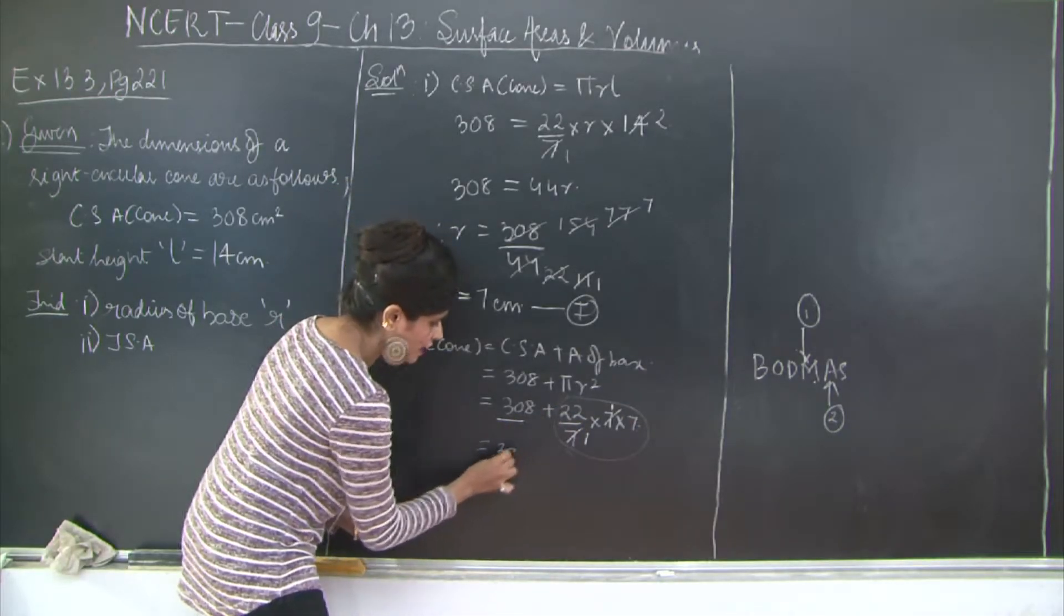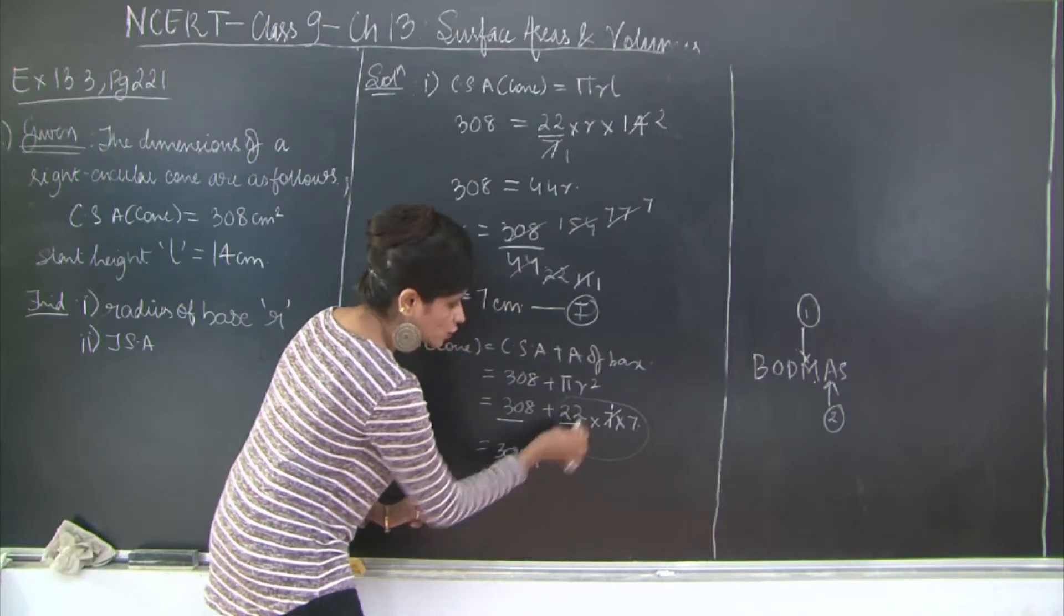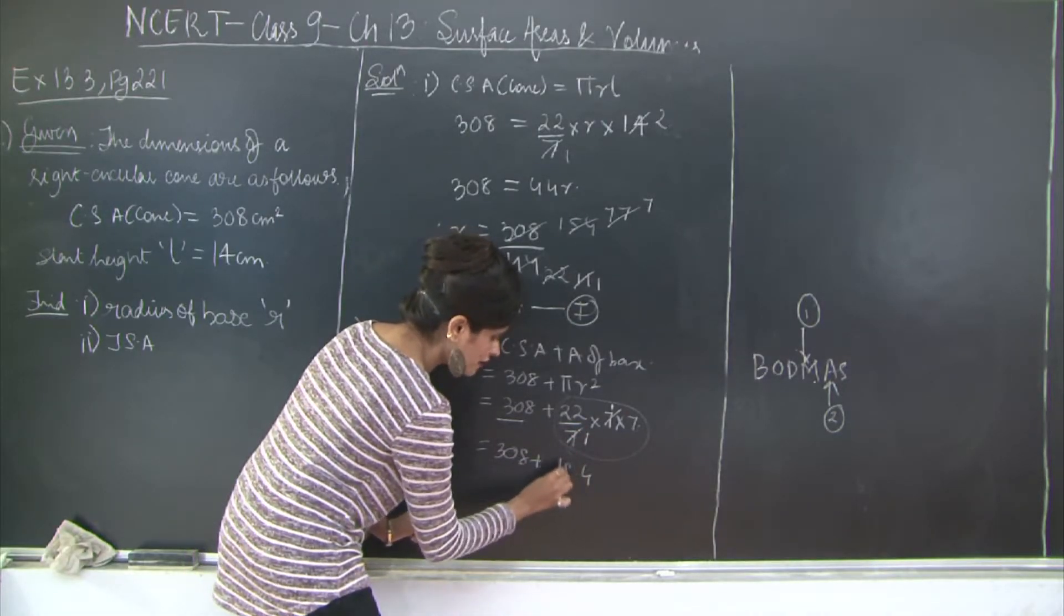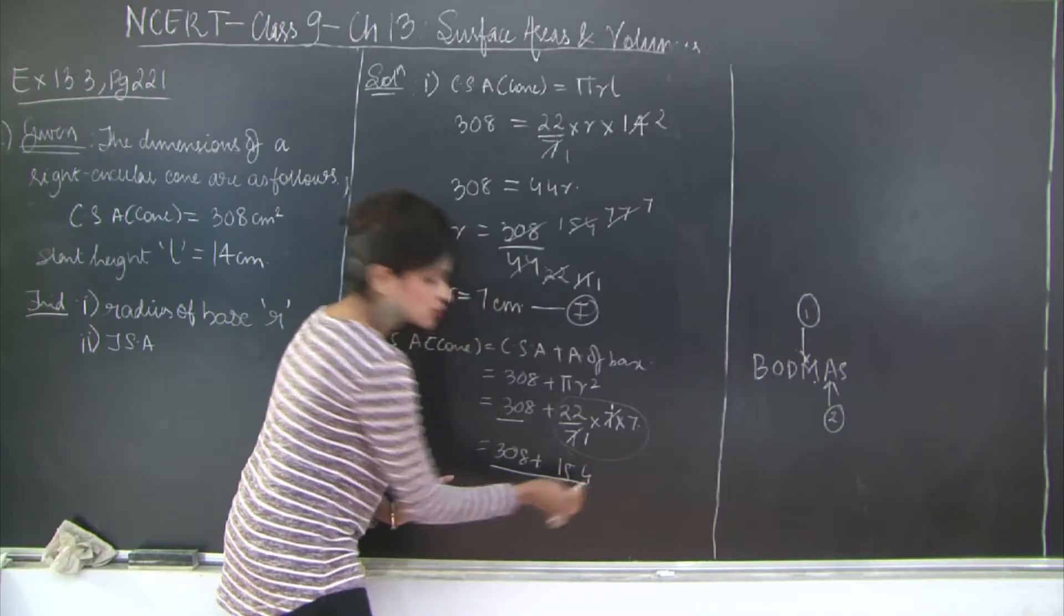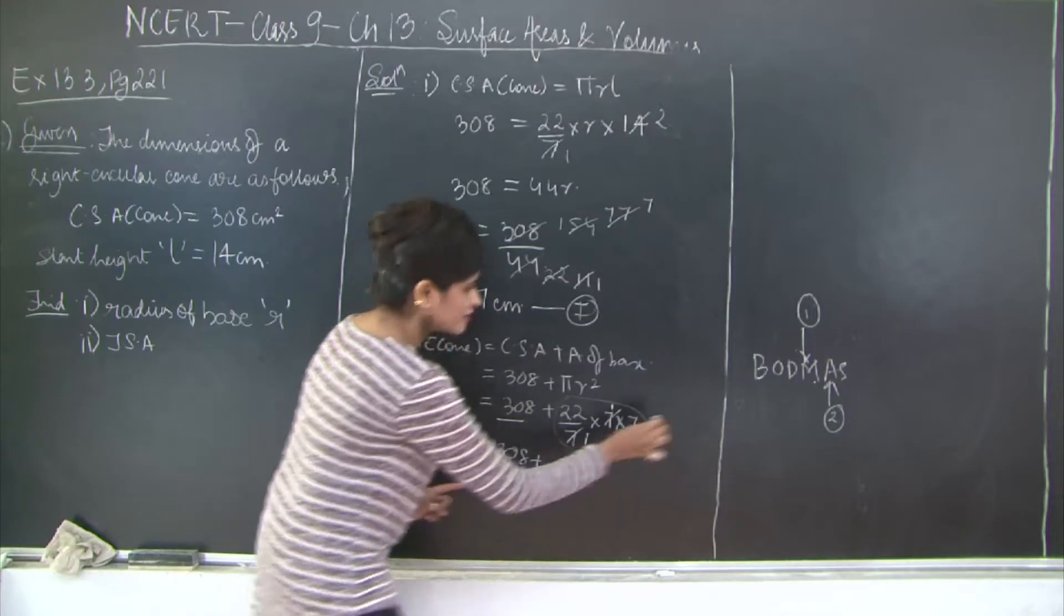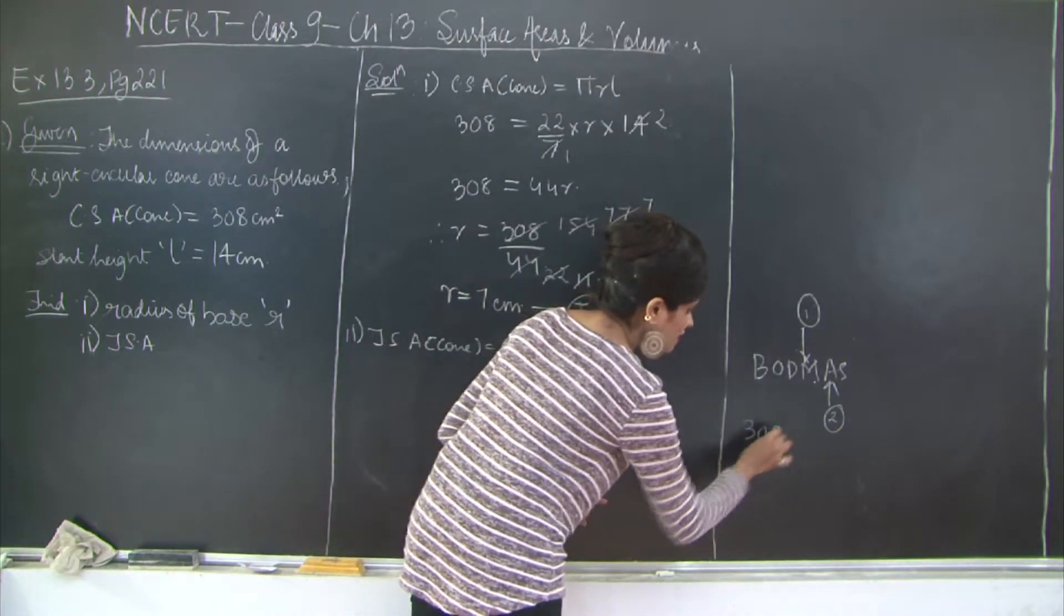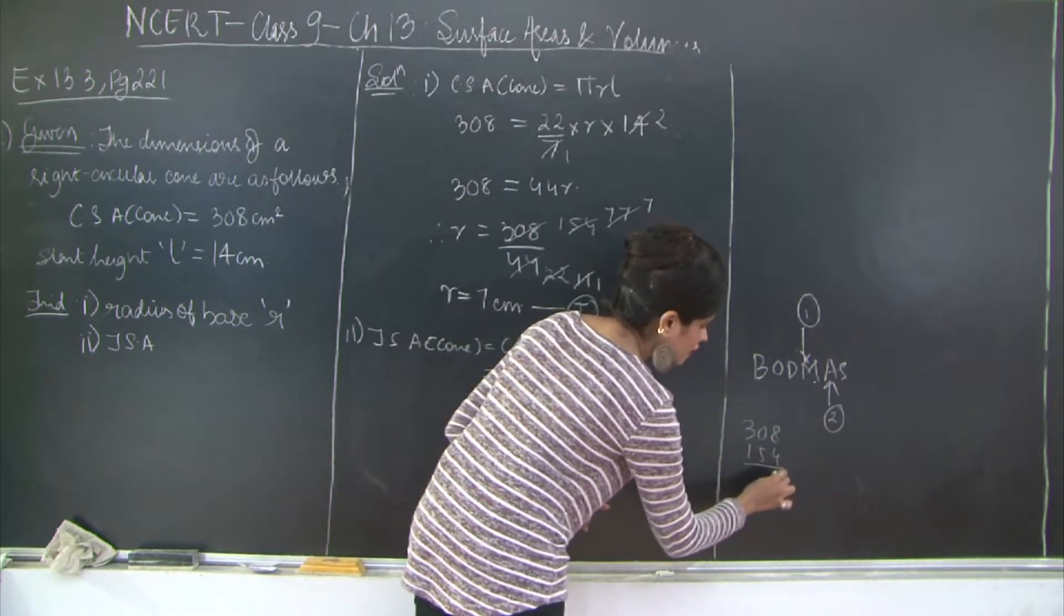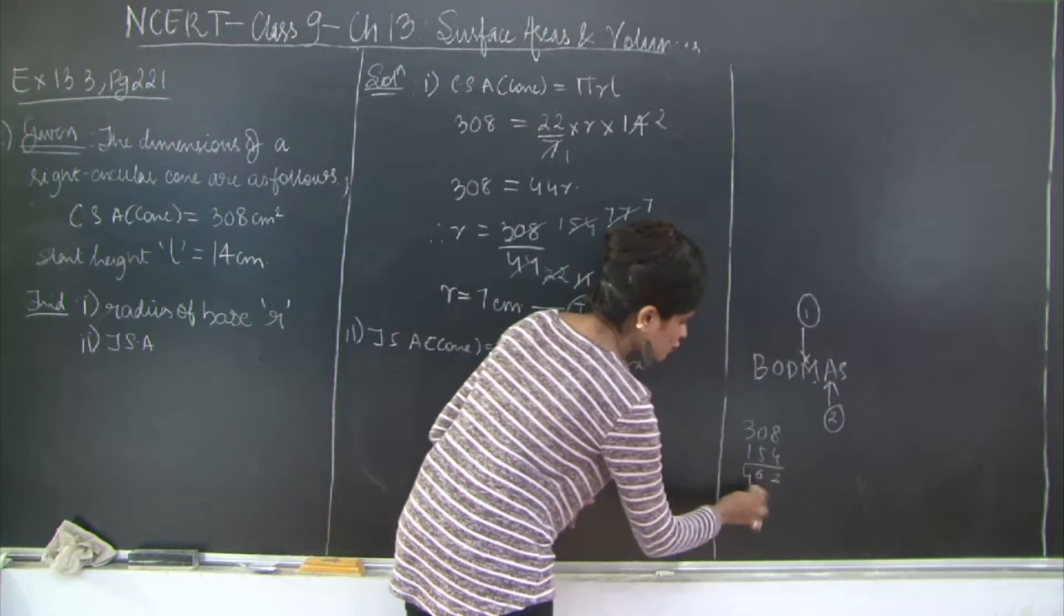So I will write 308 as it is. Plus 22 into 7 is 7 2s are 14, 7 2s are 14, 154. Now you are free to add these two terms. So 308 plus 154 will give me 308 and 154, 4 plus 4.